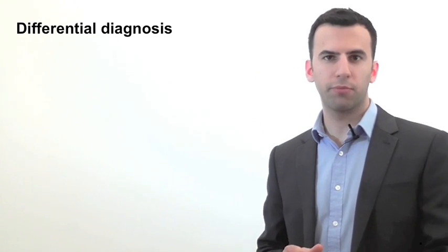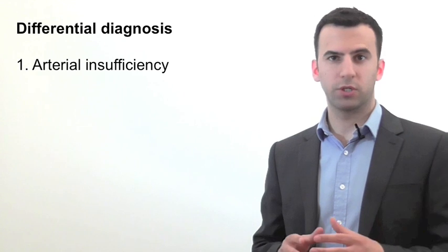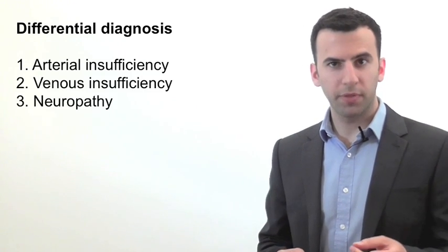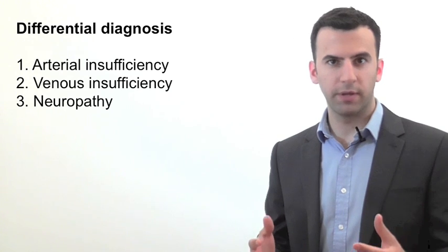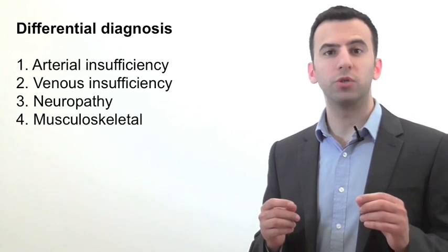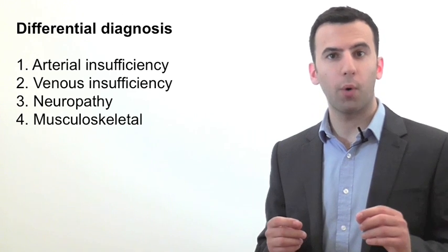You need to ask the right questions during history taking to make sure you're not confusing peripheral arterial disease with other common pathologies that cause lower limb pain. The main causes of chronic lower limb pain are arterial insufficiency, which is why we're here, chronic venous insufficiency, neuropathy, so a problem with the nerves, in particular the ones coming out of the lumbosacral spine, and musculoskeletal pain, often due to osteoarthritis of the hip or knee.